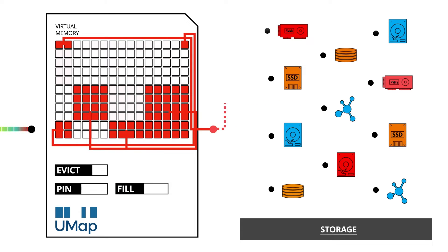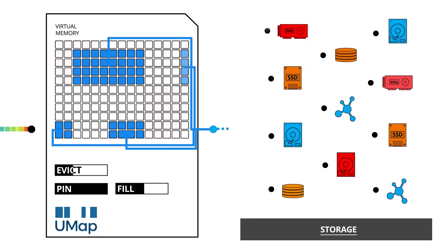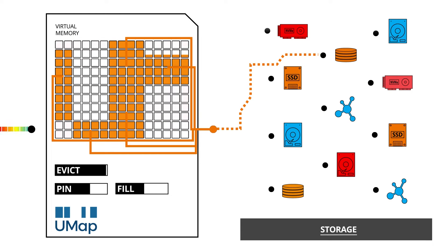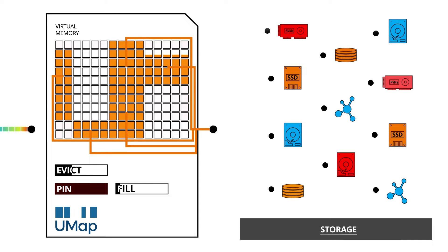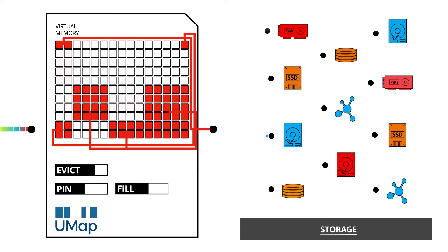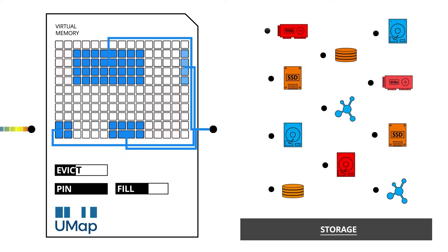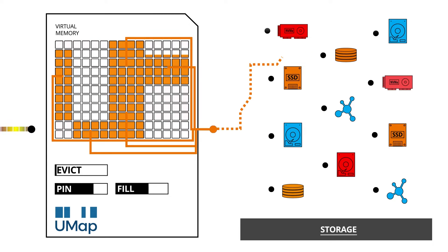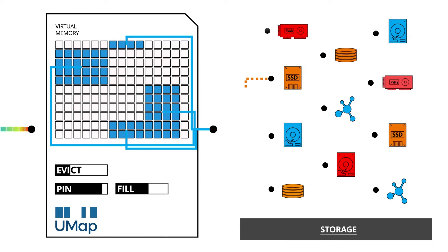UMAP tracks which pages the application is accessing and can evict unused pages to free up space, unless they are pinned to prevent eviction, which is similar to how a browser saves favorite websites. The rules for filling, pinning, and eviction can be easily customized according to the application's needs.